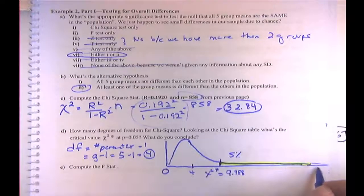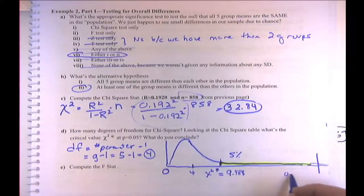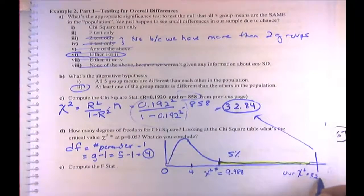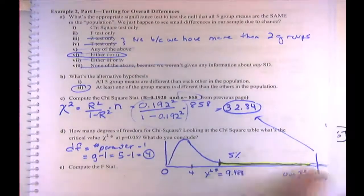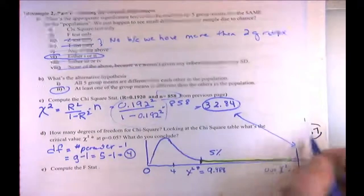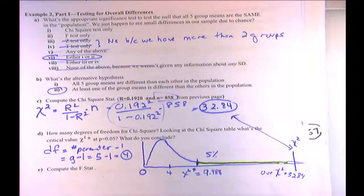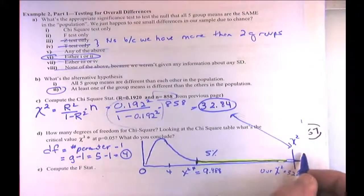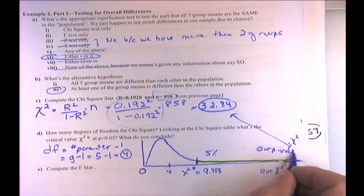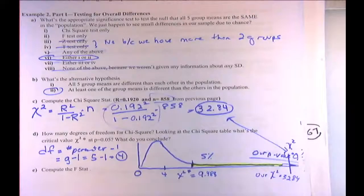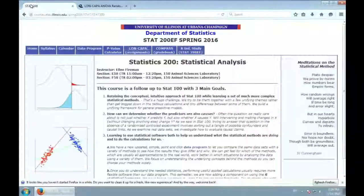Our chi-square of 32.84 gives a p-value that's essentially zero. Going to the computer to get it more accurately: with 4 degrees of freedom and a value of 32.84, it says it's out of the plotting range. Even as a percent it's tiny. So we reject the null.